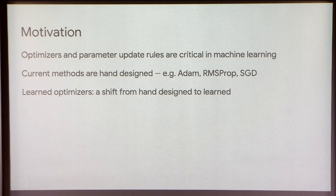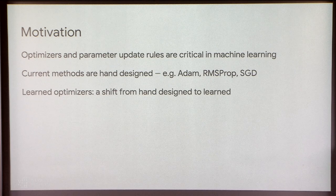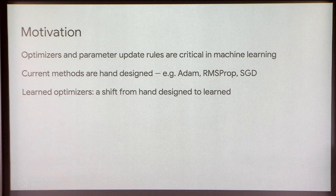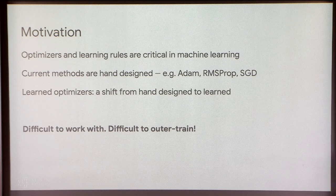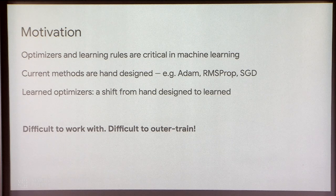Update rules are completely critical to the success of deep learning. Most current methods are hand-designed. You can think of most current optimizers as quite simple functions that take in a gradient and output a parameter update. We are going to instead learn those. This turns out to be quite challenging for reasons I'll go into more depth on as we move along in the talk.